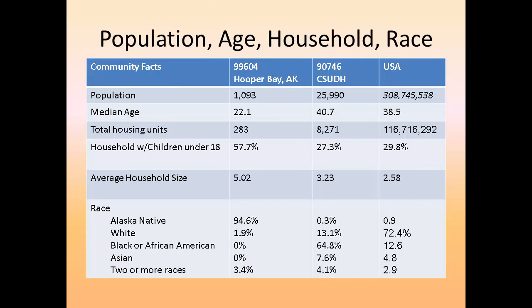What I did was take the information from the census site and created a table. I compared the median age of Hooper Bay with the median age of people in Carson and the U.S. as a whole. The median age in Hooper Bay was 22.1, in contrast to 40.7 for Carson, California, so most people are about half the age in Hooper Bay. I also looked at the percentage of households with children under 18: in Hooper Bay, 57.7% of households have children under 18, whereas only 27.3% of households near Cal State Dominguez Hills do. I also compared average household sizes and race.